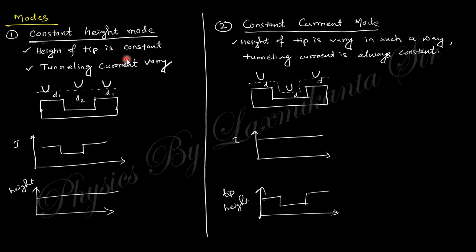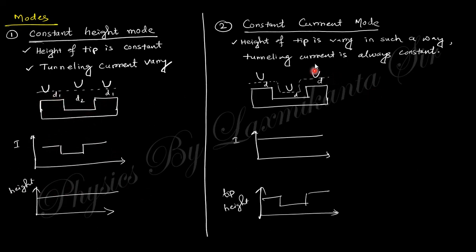There are two modes used in STM: constant height mode, where the height of the tip is constant, and constant current mode, where the current is constant. In constant height mode, as the gap between the tip and sample changes, the current changes — when the gap is low, current is high; when the gap is high, current is low. This gives a current profile reflecting the surface topography. In constant current mode, the distance is kept the same as the current is held constant, and the height variation of the tip changes accordingly to map the surface.